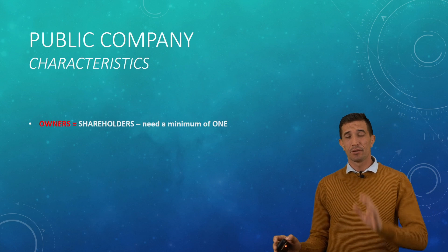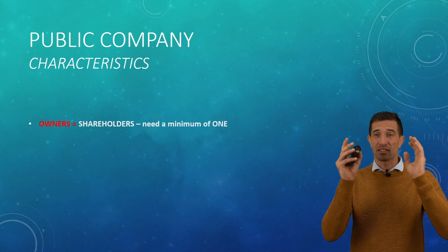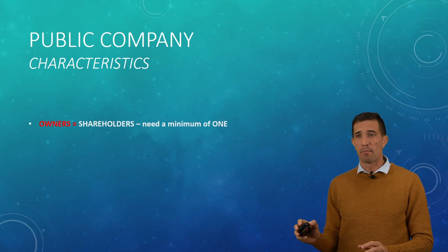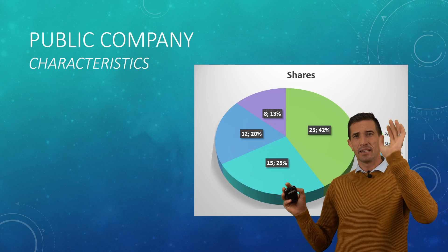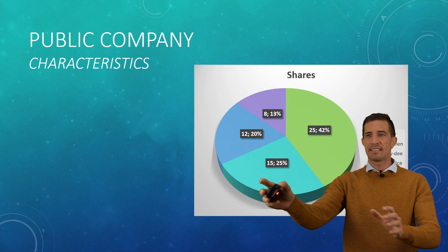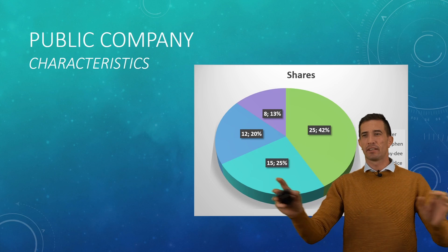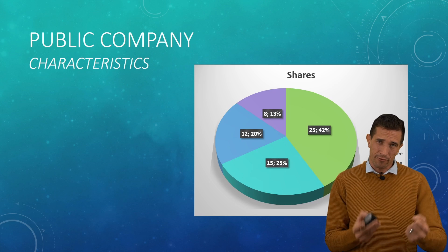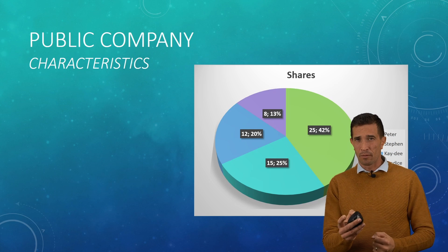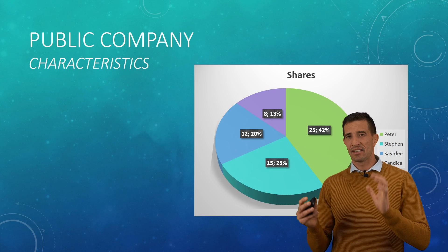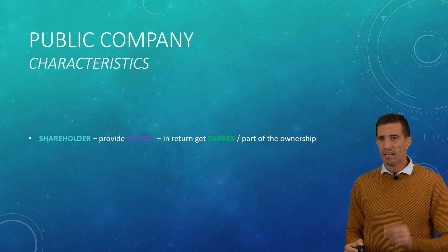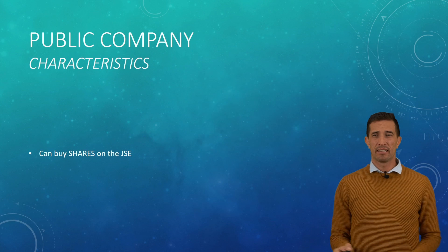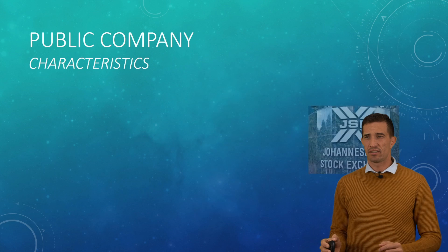There is unlimited continuity, which is an advantage. The owners are still called shareholders, and they need a minimum of one shareholder. You can see the different types of people, different types of shares, and what do they get in return? The reward is a dividend — that's their share in the profit. So they have to provide the capital, and then they can buy shares on the JSE.